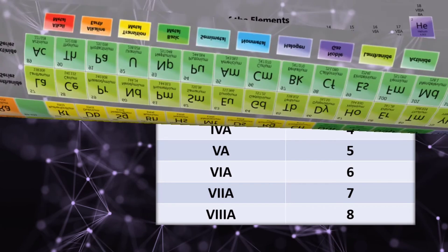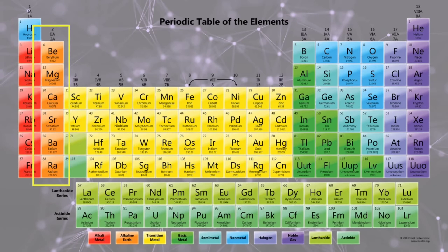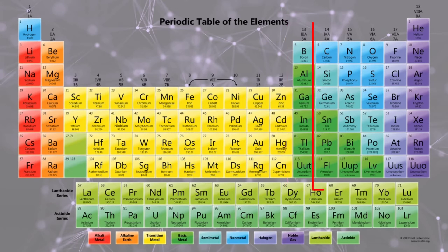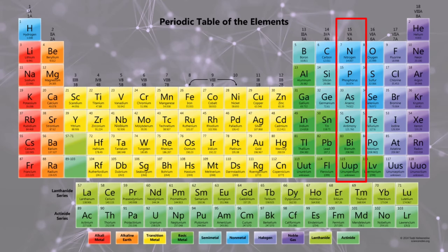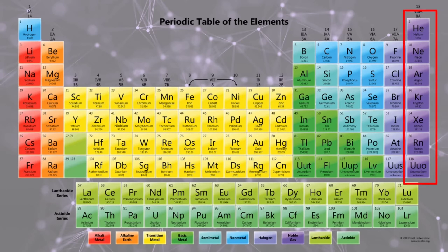Let's take a look at the periodic table. Group 1A, the alkali metals, have 1 valence electron. Group 2A have 2 valence electrons. Group 3A have 3 valence electrons. Group 4A have 4 valence electrons. Group 5A have 5 valence electrons. Group 6A have 6 valence electrons. Group 7A have 7 valence electrons. Group 8A, which is the noble gases, have 8 valence electrons.